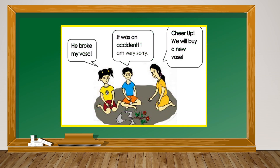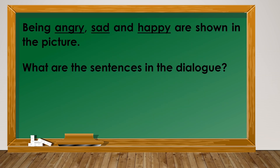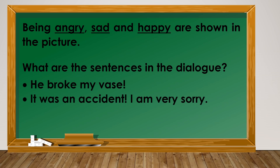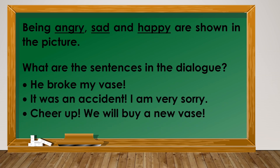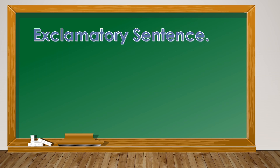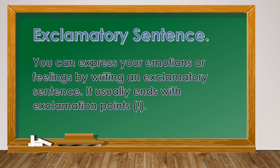Let us read another dialogue. 'He broke my vase!' 'It was an accident. I am very sorry.' 'Cheer up! We will buy a new vase.' What are the emotions shown in the picture? We call these sentences exclamatory sentences. You can express your emotions or feelings by writing an exclamatory sentence. It usually ends with exclamation points.